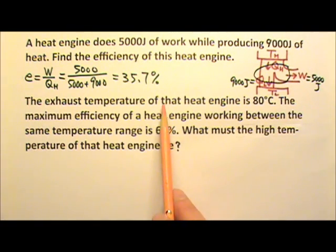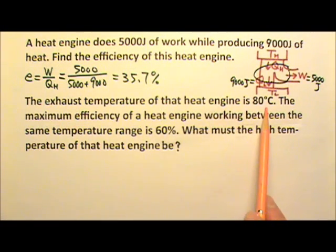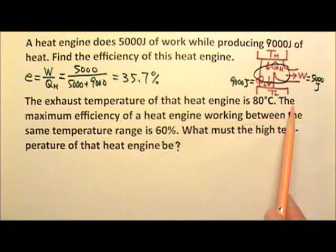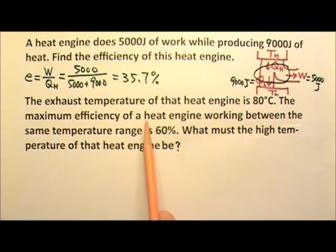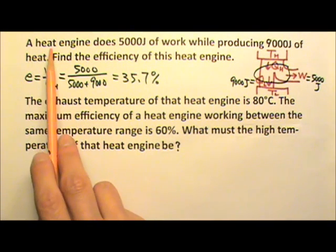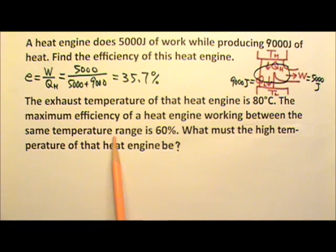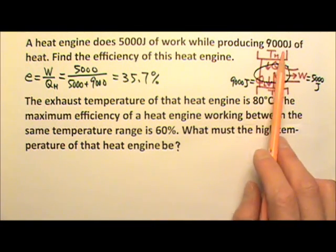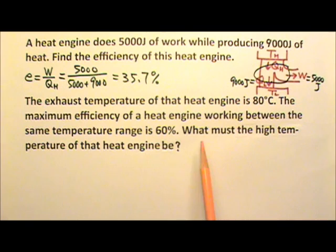The exhaust temperature of that heat engine is 80 degrees Celsius. The maximum possible efficiency of a heat engine working between the same temperature range is 60%. The same temperature range means the same TH and TL. What must the high temperature of that heat engine be?